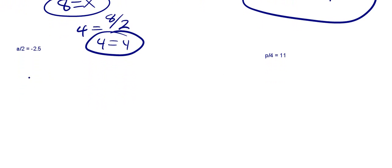So we've got this problem. We've got a, some number a. We're dividing it by 2, and we're getting negative 2.5. Well, what could a be? What number, when you cut it in half, is a negative 2.5?